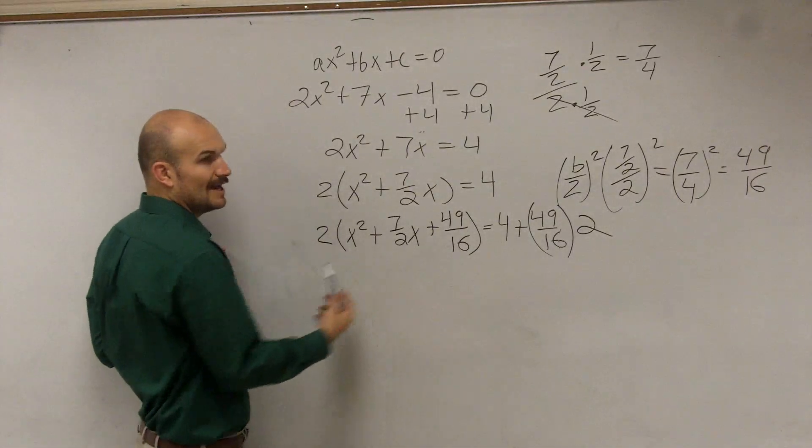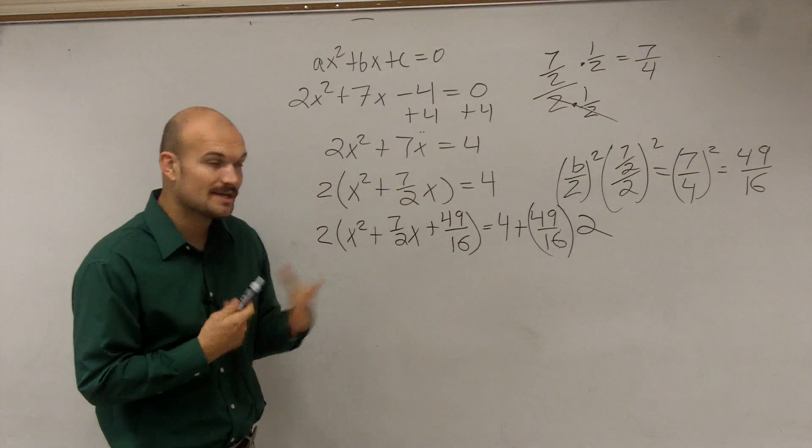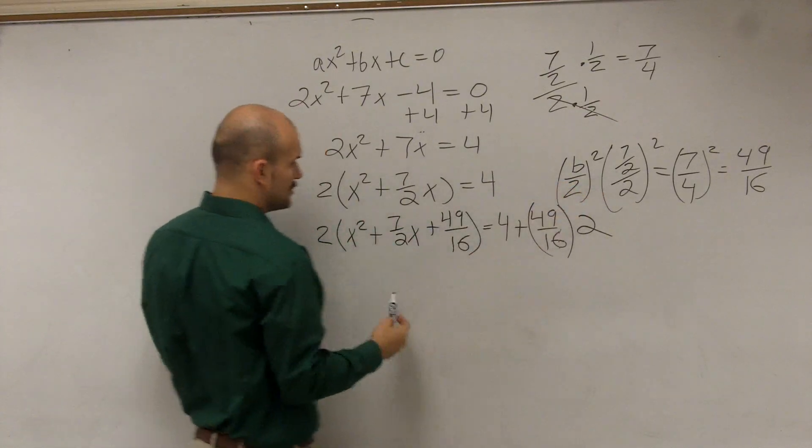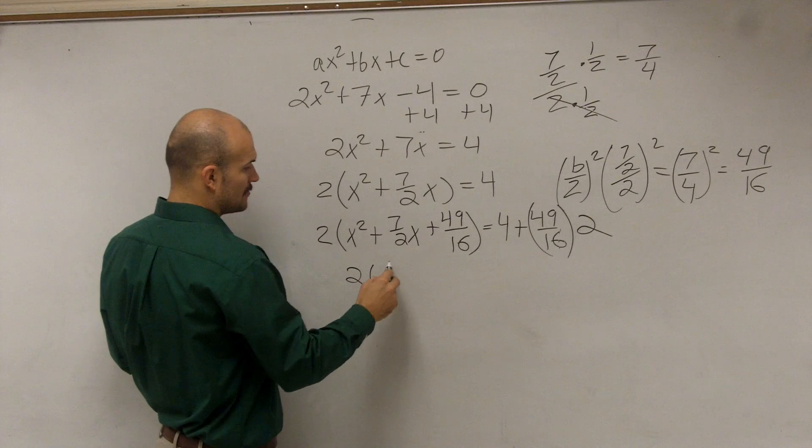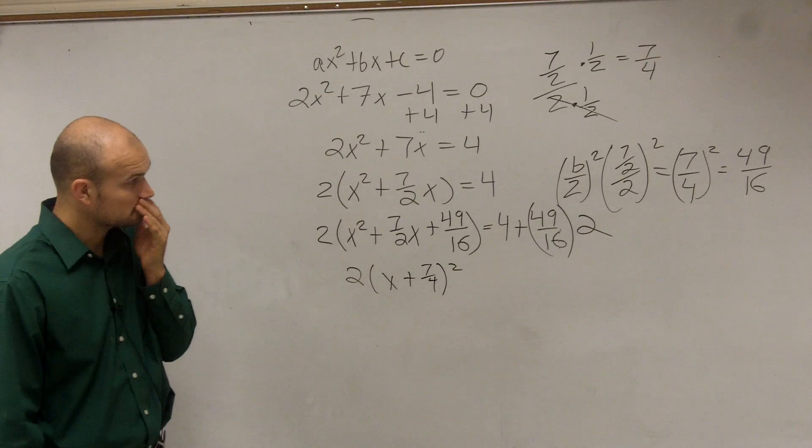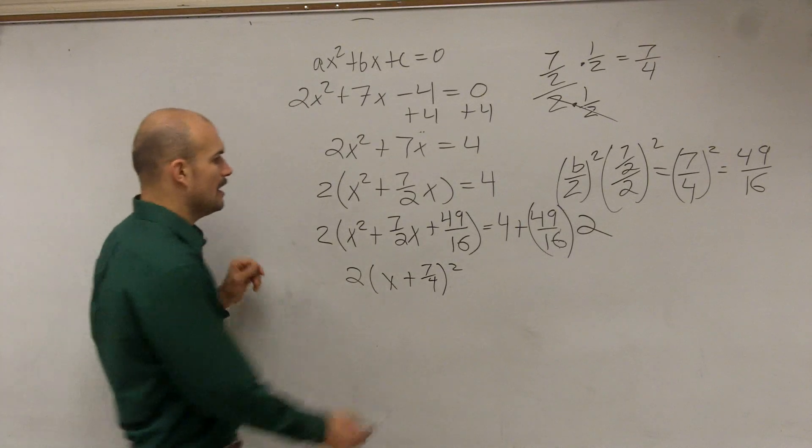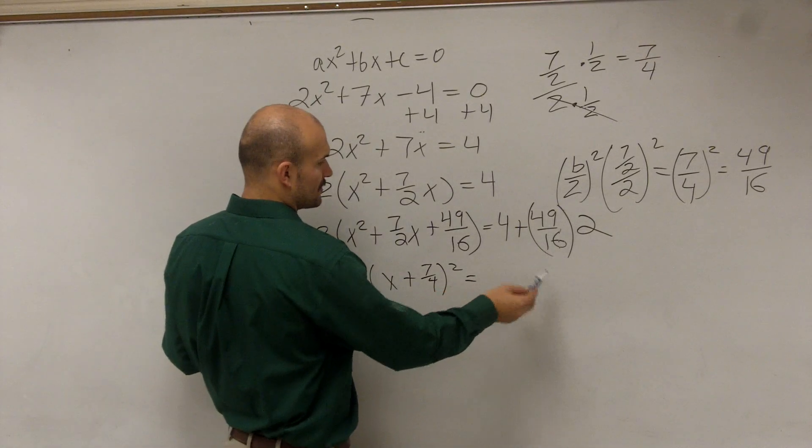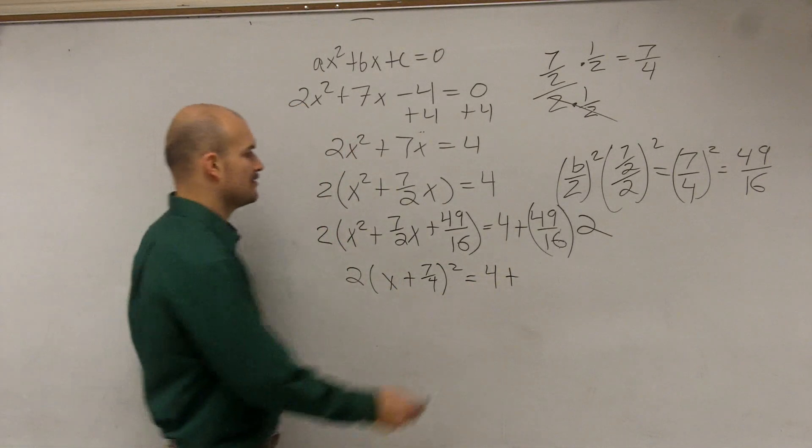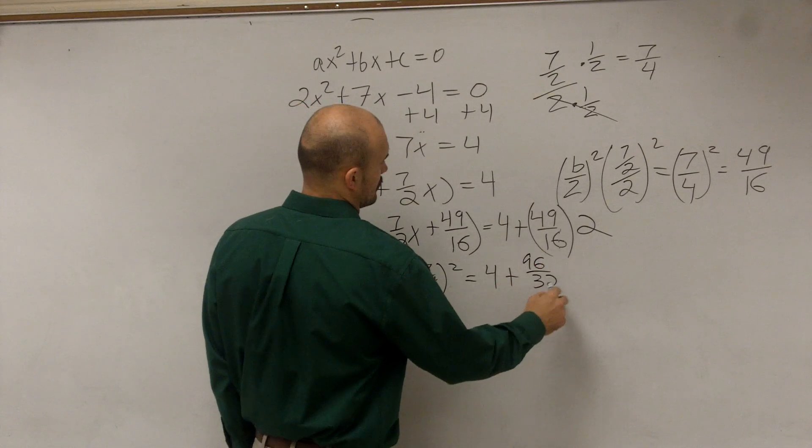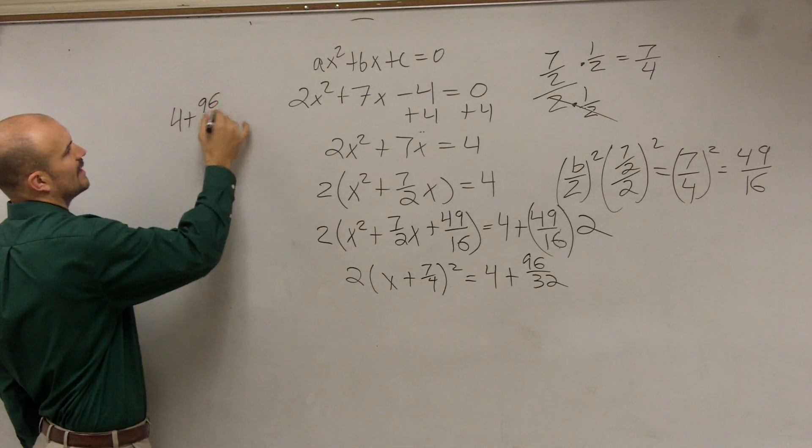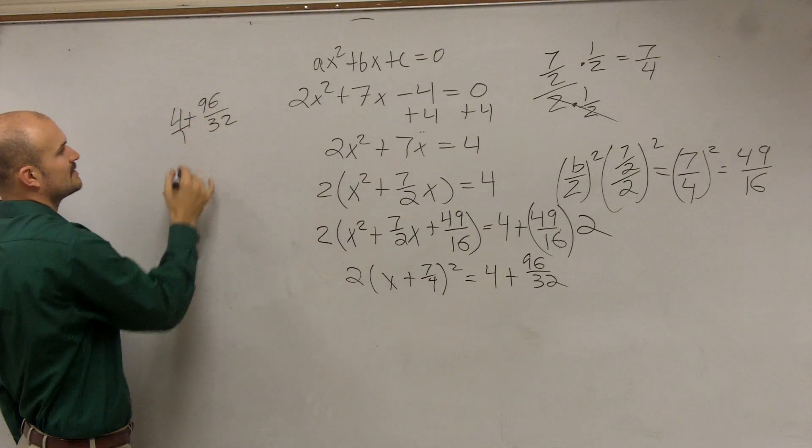So now, let's create our perfect square trinomial. We'll get to adding our fractions here. So here, we take our b over 2. So we're going to have 2 times x plus 7 over 4 squared. And then equals, so we're going to have 4 plus, let's see here. We're going to have 98 over 32. So now, let's do a little side math, 4 plus 98 over 32. Get them to be the same denominators.